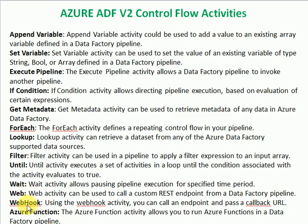There are two more activities for calling REST API URLs: Web and Webhook. You can use these in a data pipeline — for example, if you want to trigger a runbook to refresh an Analysis Services cube, you can use the webhook with that runbook URL. Similarly, the web activity is used to trigger any REST API URLs.